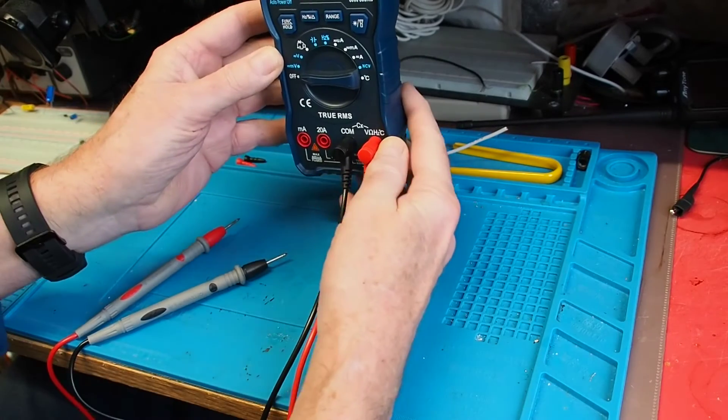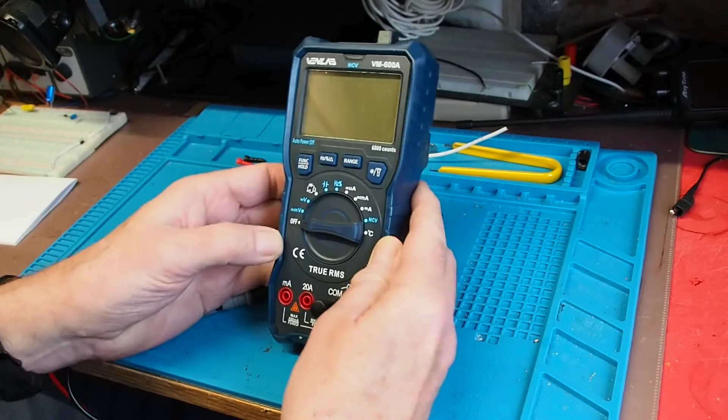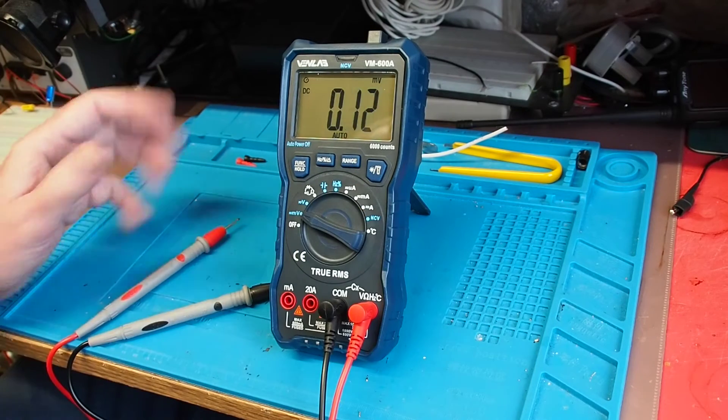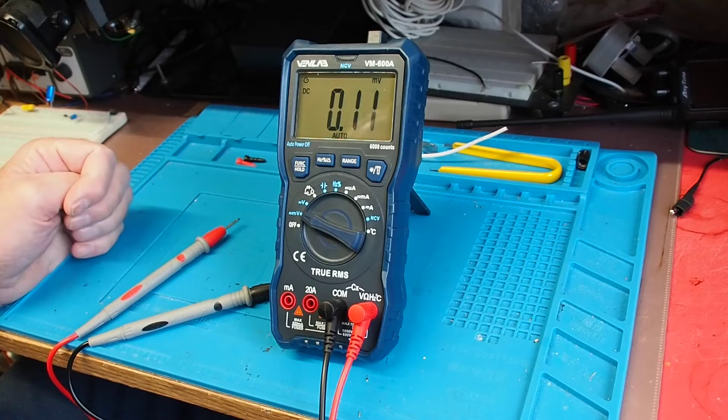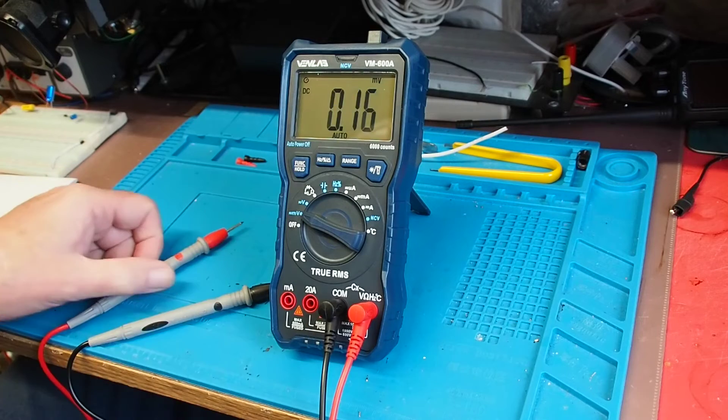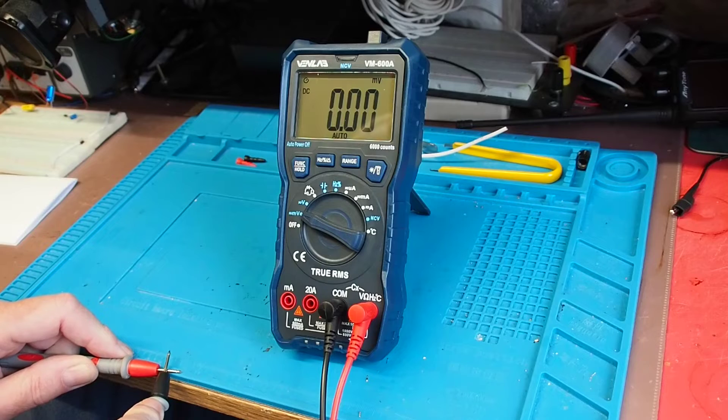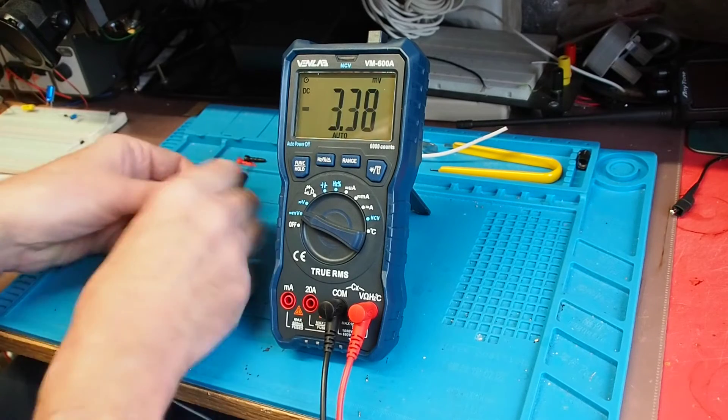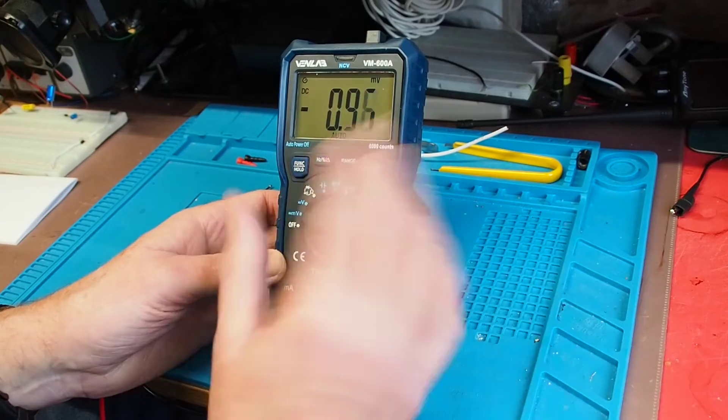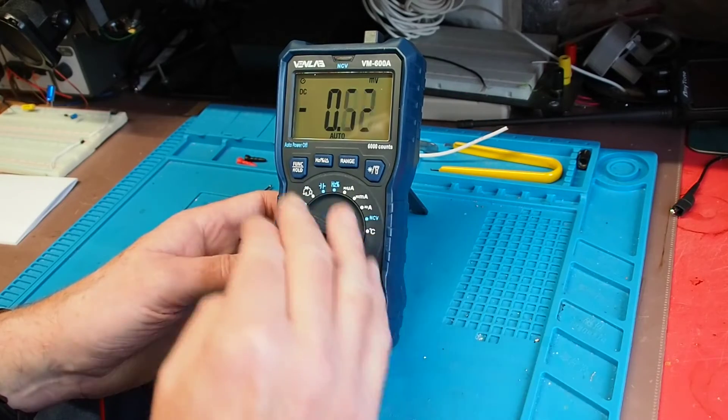It's got a magnet built into the protective boot so if you want to stick it to a suitable surface it will do that, and obviously the bench stand is a very handy feature. Switching on, we get a nice clear display. My old eyes quite like a nice large display like that. By default we have auto ranging with voltage, current, resistance, capacitance, frequency, all the various bits and pieces.